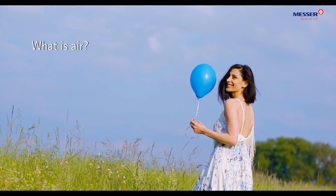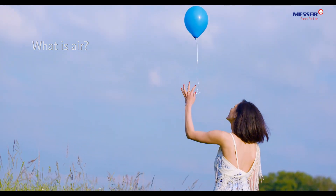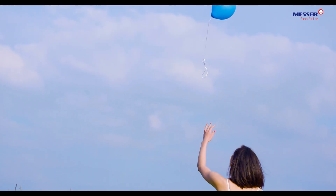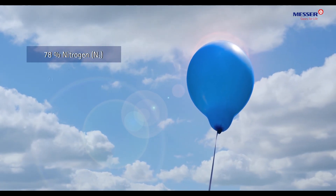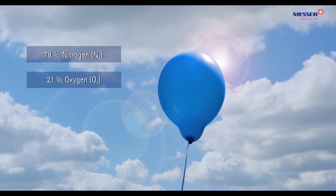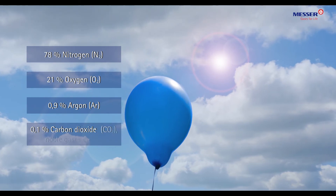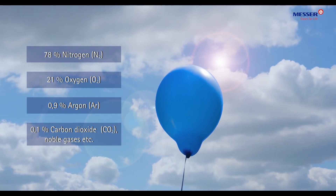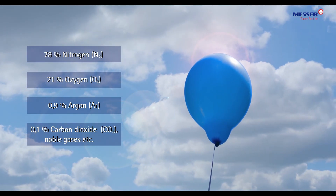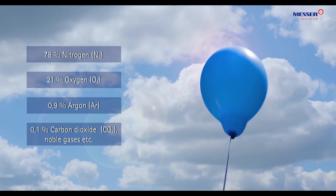What is air? Air consists of 78% nitrogen, 21% oxygen, 0.9% argon, and 0.1% carbon dioxide, noble gases, and other gases.